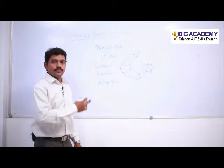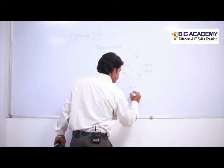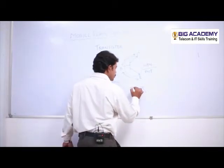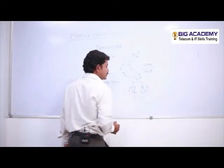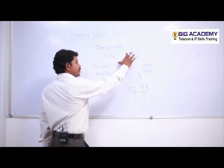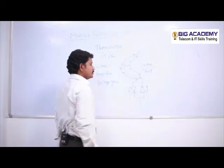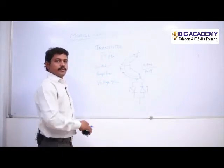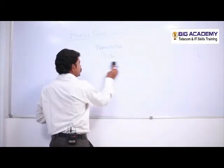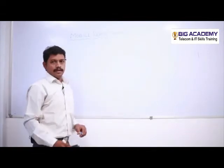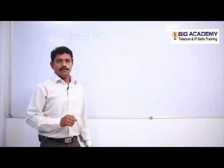We can model a transistor as two diodes connected together — one from base to emitter and one from base to collector. This is how a transistor was formed in its earlier stage. Just as a diode is a unidirectional device, a transistor is a bidirectional device — it works in two directions. That is the key difference between a diode and a transistor.